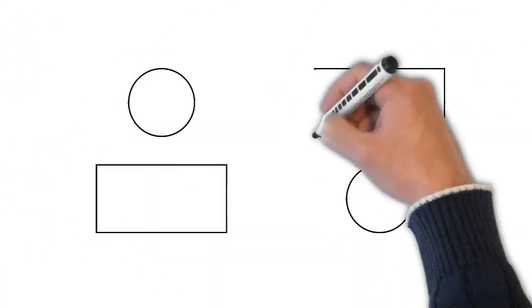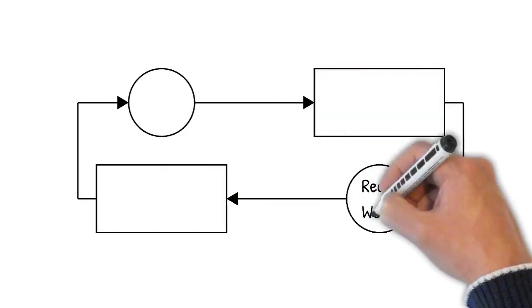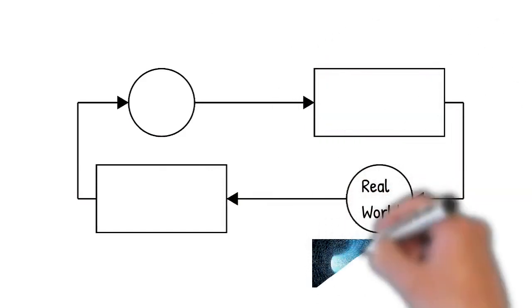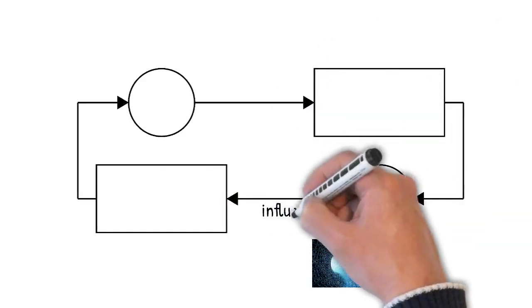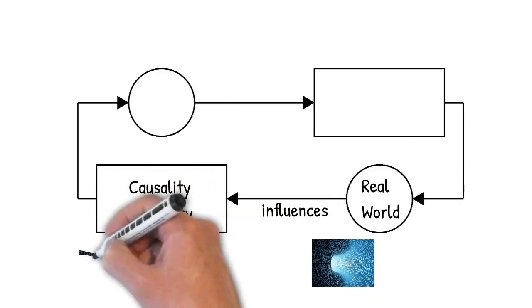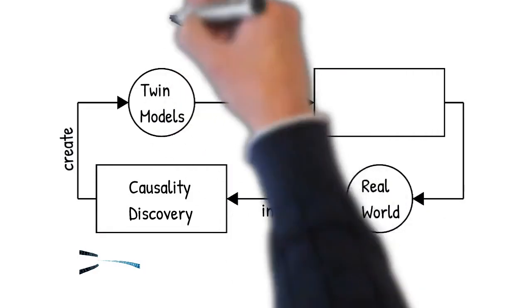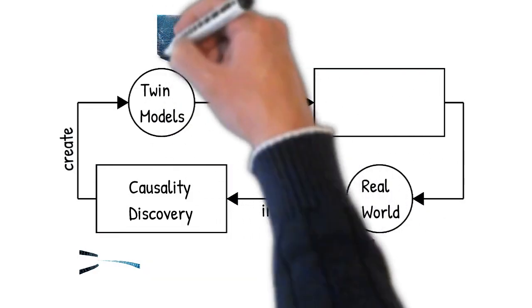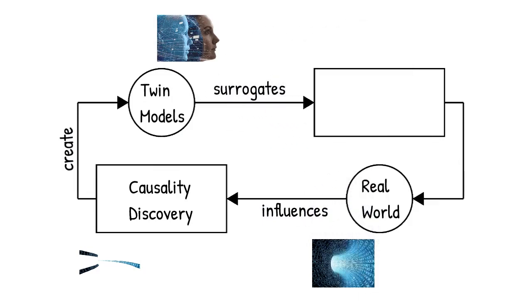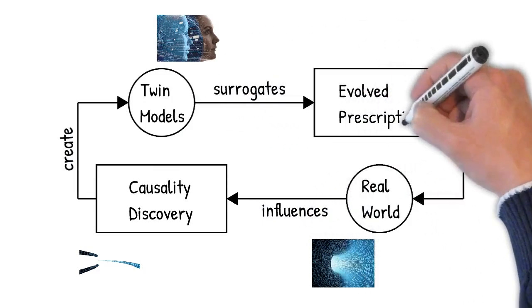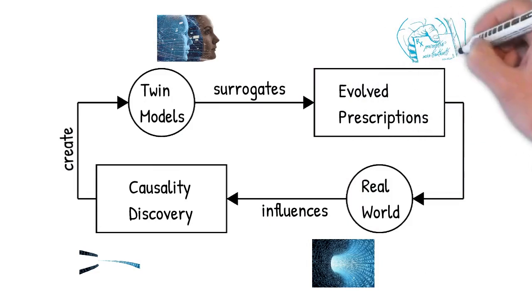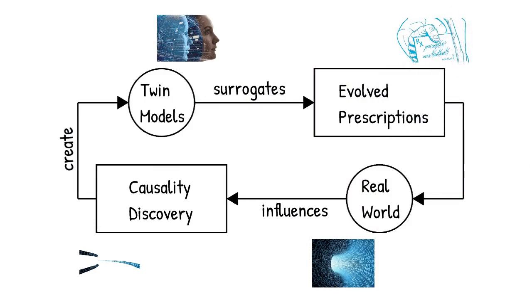The evolutionary process starts in the real world that produces boundless streams of data. Not all of this data is influential in our problem, so we need to identify that data which is causal. Using that data, we can create virtual models of the problem, otherwise known as digital twins. This twin acts as a surrogate through which we can find optimal solutions to our problems, that is, our prescriptive solutions. These prescriptions then are applied back to the real world.